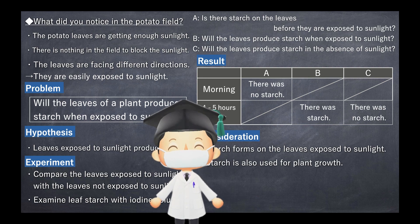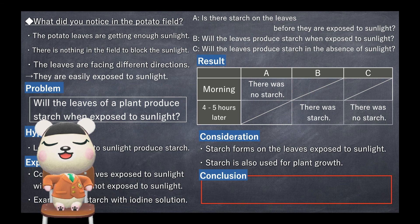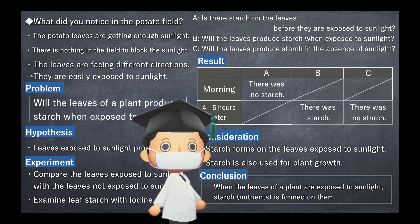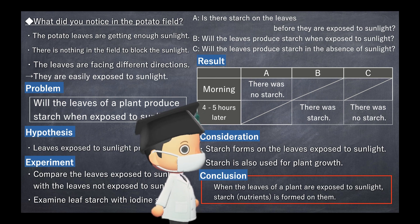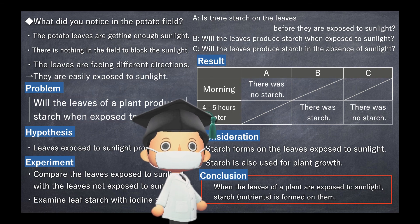Let's conclude. When exposed to sunlight, starch is formed on the leaves and will be used as a nutrient for growth. When the leaves of a plant are exposed to sunlight, starch is formed on them. From the fact that starch is used for germination and growth — which we learned in the fifth grade — the nutrients produced in the leaves are used for the growth of plants.